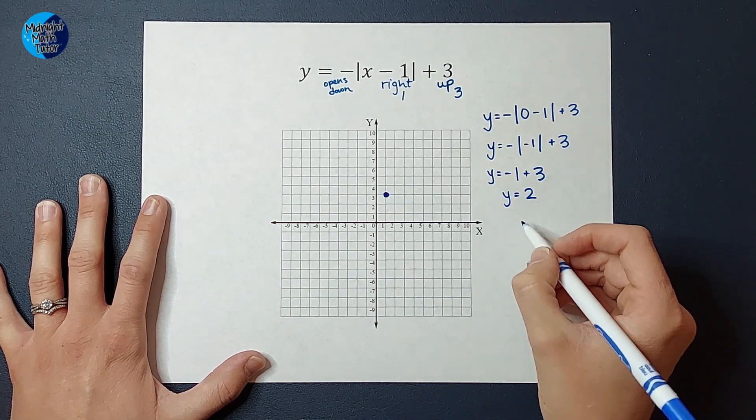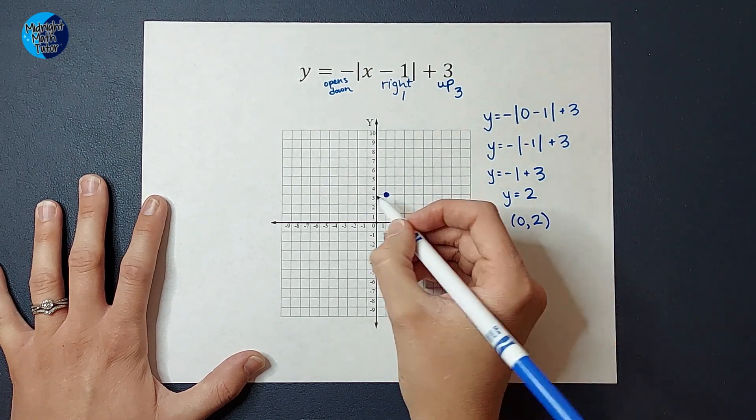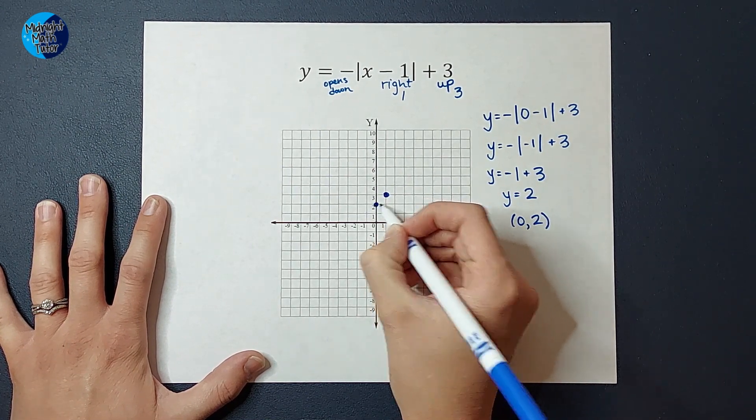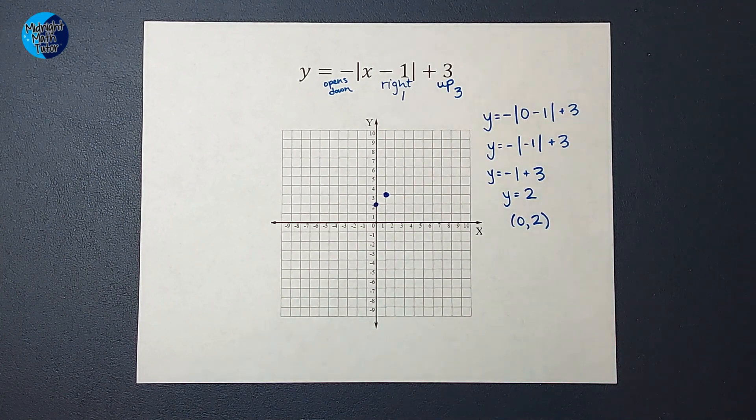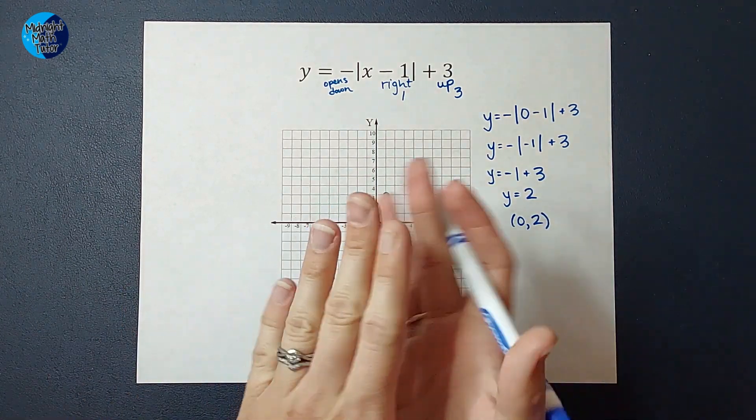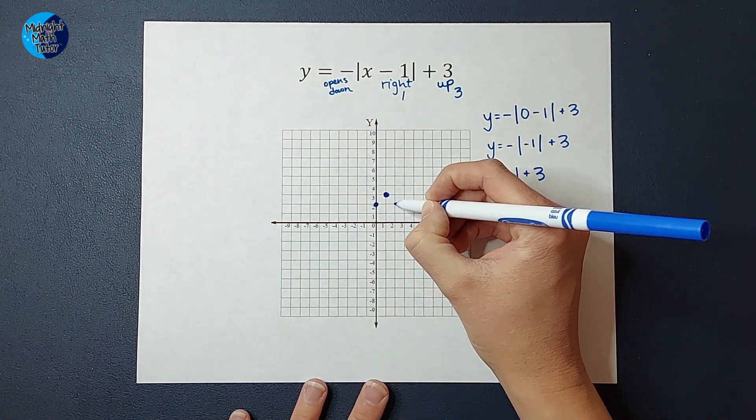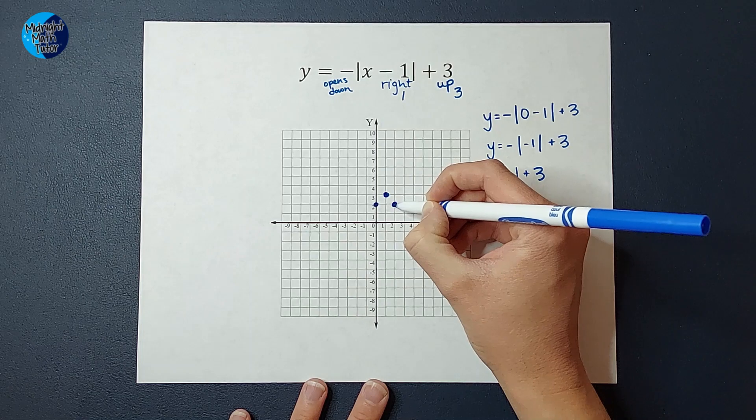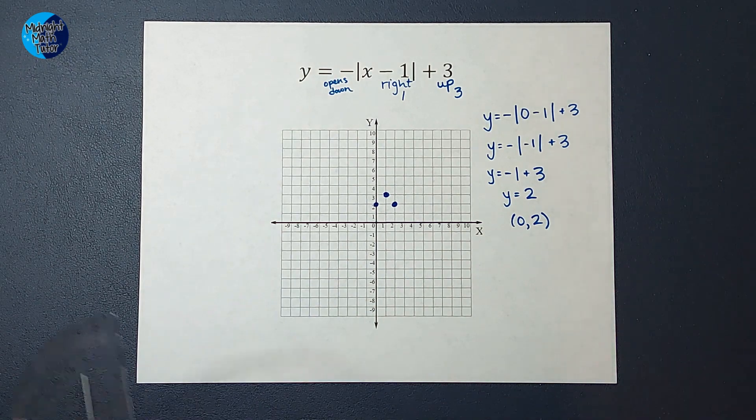So when I plugged in zero for X, I got two for Y, and that is my point right there. Now, another thing to know about absolute value graphs is that they are symmetrical, meaning they're the same on one side as the other. So if I have that point there, there's also going to be a point there. Now if you ever forget that or you're not sure, you can always plug it in to make sure.